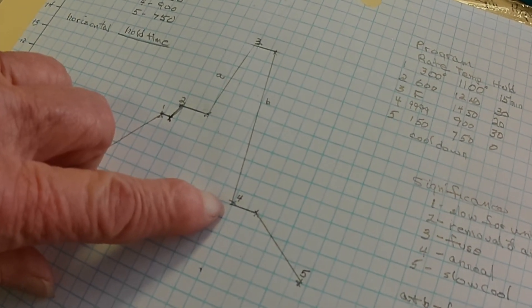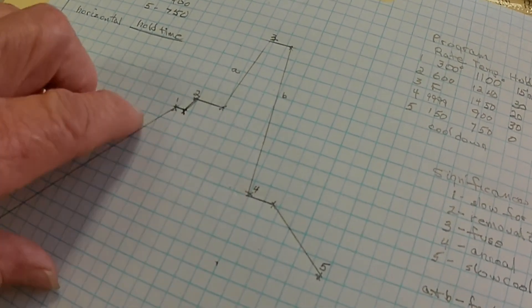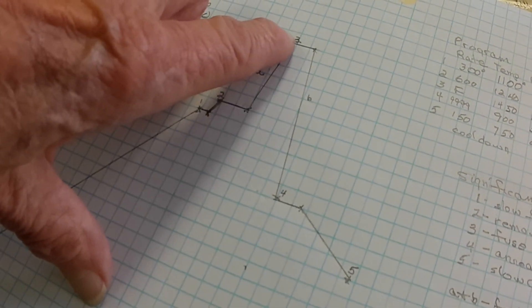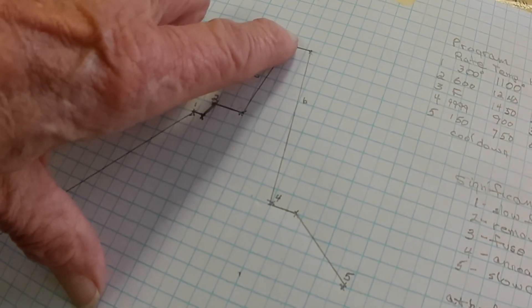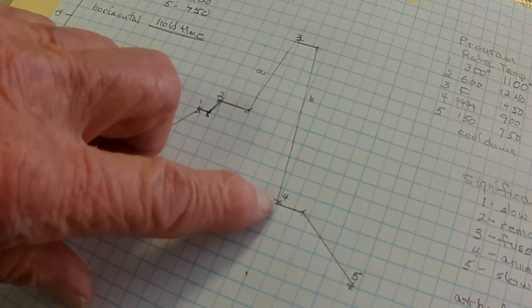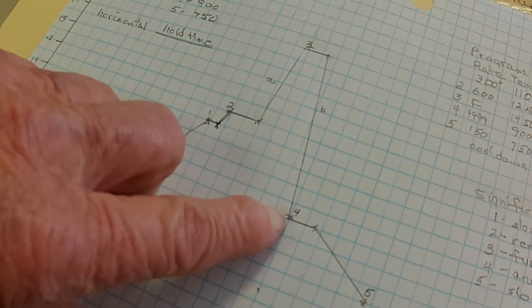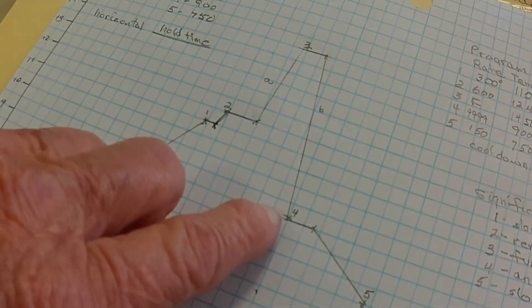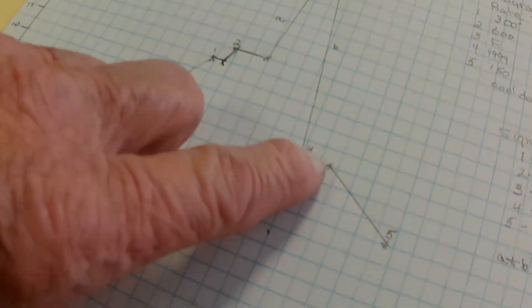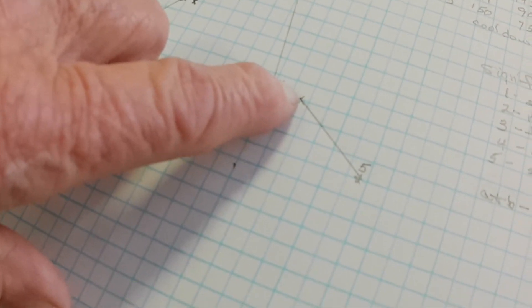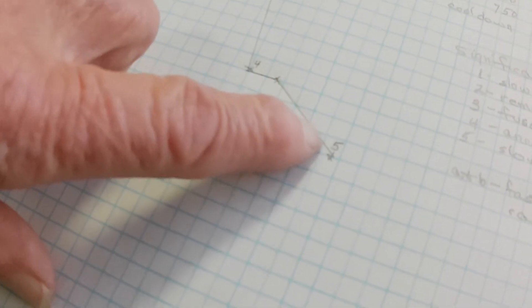The glass is fluid up here. We've made all those molecules mobile. At the annealing point we want them to go back where they were. So we hold that for 30 minutes and then let it cool slowly down to 750.